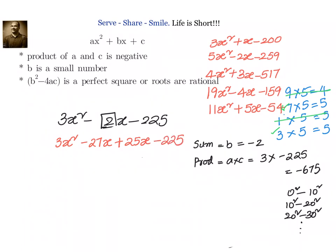Minus 27x plus 25x minus 225. We know after this what to do. It is generally what we always do. 3x into (x minus 9) taking the factors plus 25 into (x minus 9). That is equal to (3x plus 25) into (x minus 9).